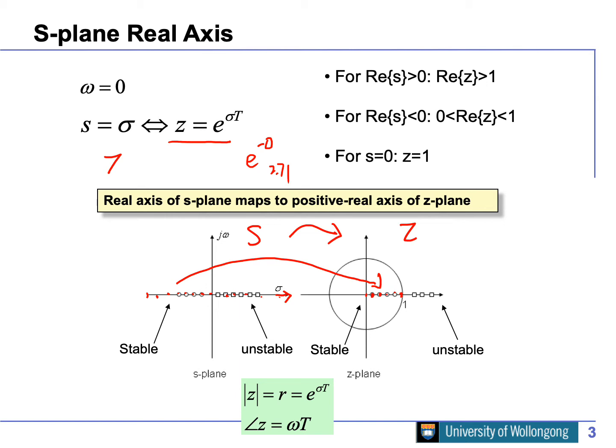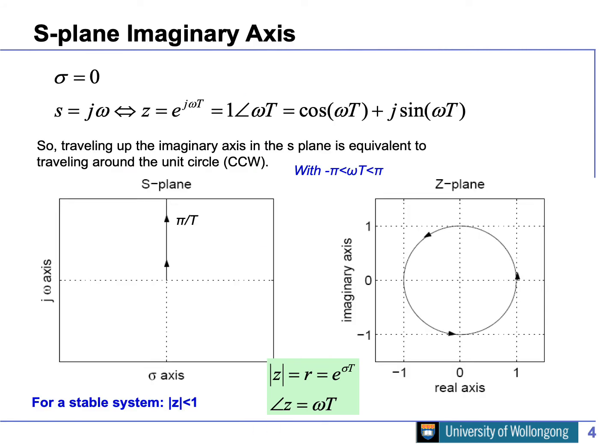For points on the right side of the real axis, sigma is positive, giving e to a positive power, which is greater than one — since e is approximately 2.7. So positive real-axis values in the S-domain map to the real axis in the Z-domain from one to infinity. Summarizing: everything from the left maps to (0, 1), everything from the right maps from (1, infinity), and the origin maps to z = 1.